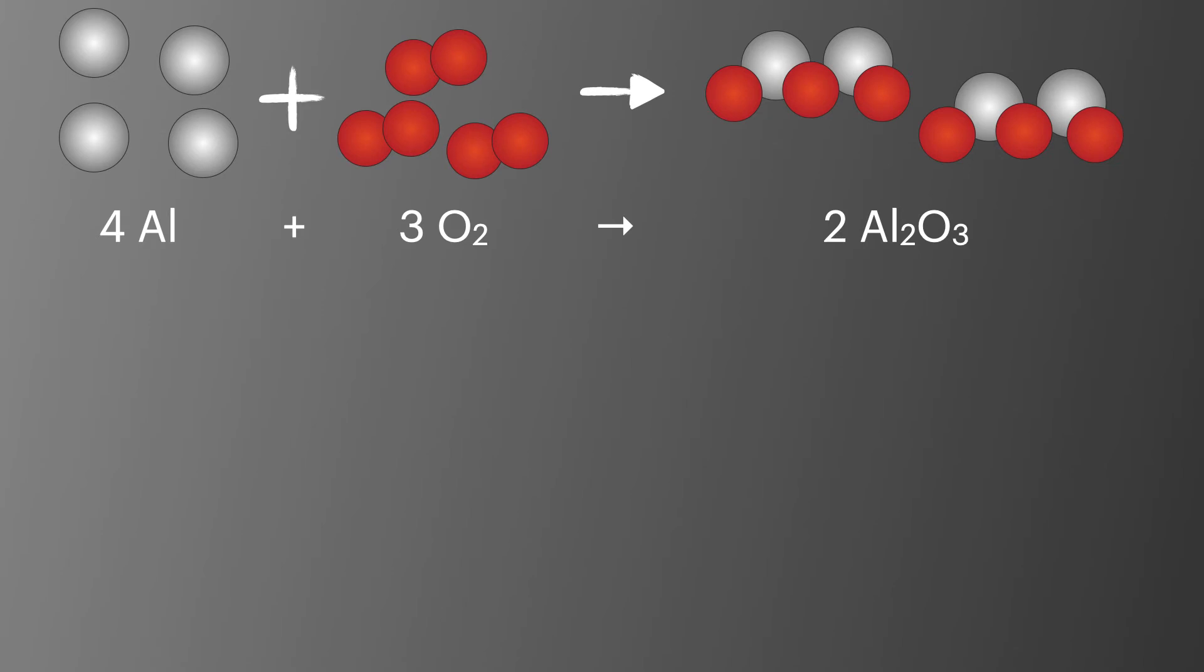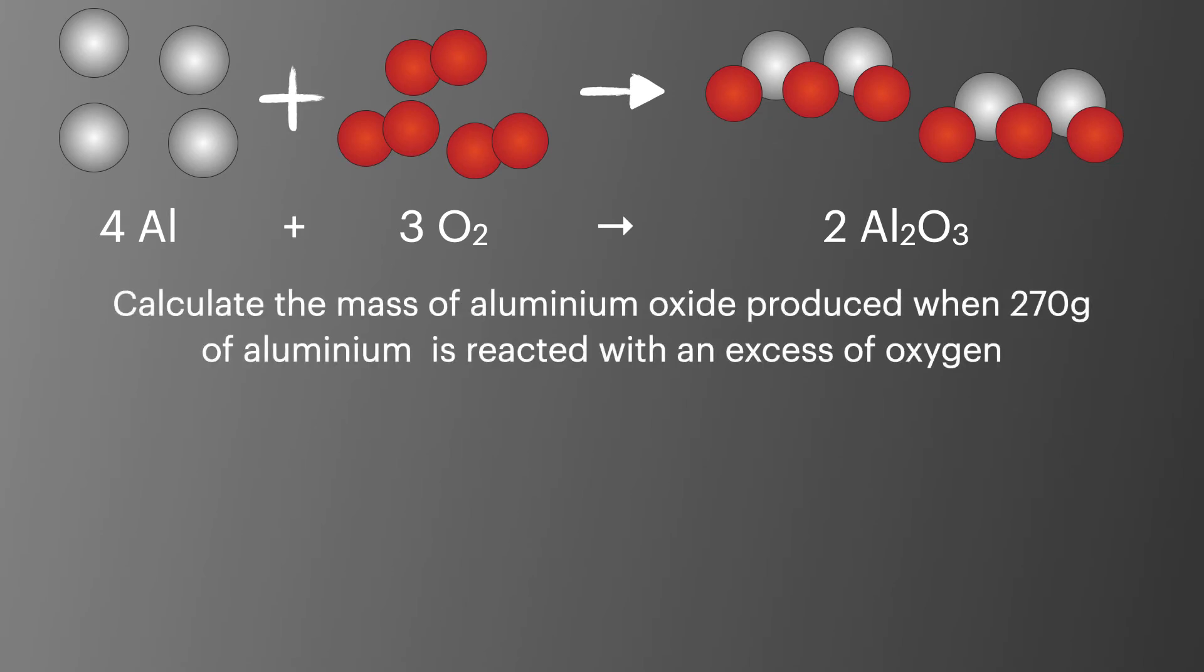Taking this reaction, we're going to look at a common practice question. We're asked to calculate the mass of aluminum oxide when 270 grams of aluminum is reacting with an excess of oxygen. To answer this question, we'll first start off by calculating the number of moles of aluminum. To do this we'll look at the number of moles equals mass over Mr. We'll then substitute in the numbers to get a value of 10.